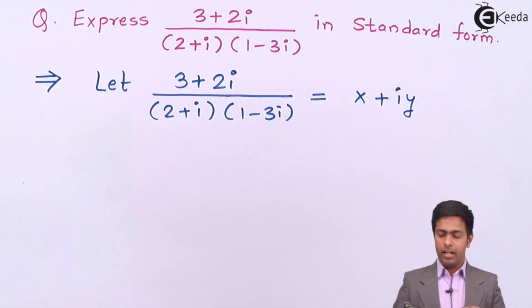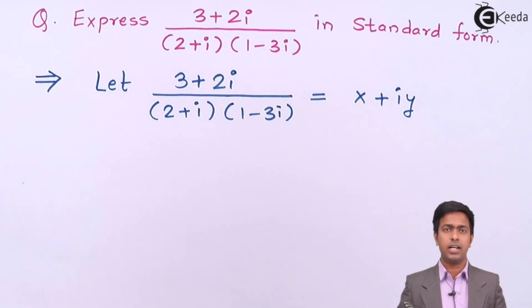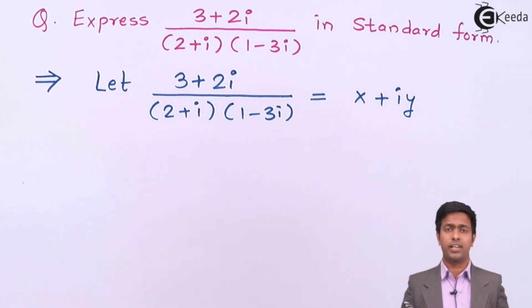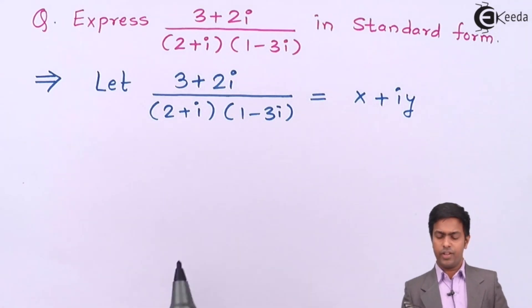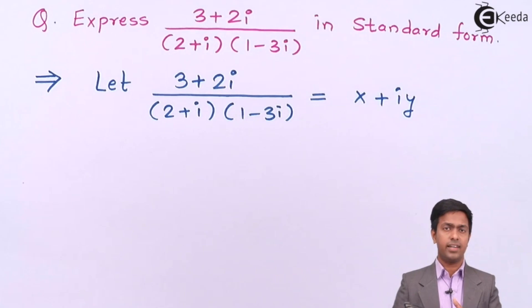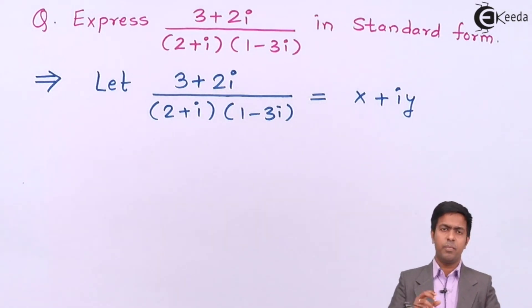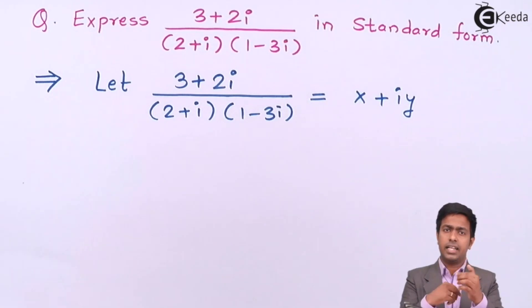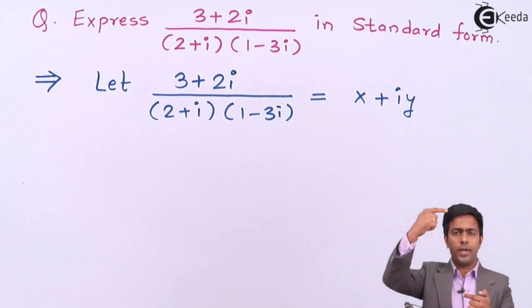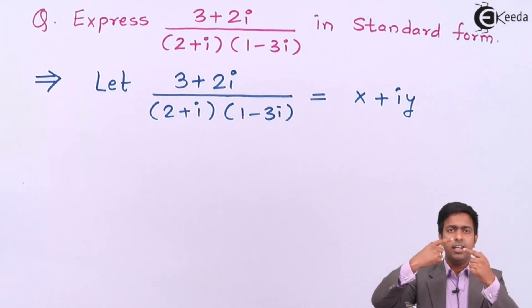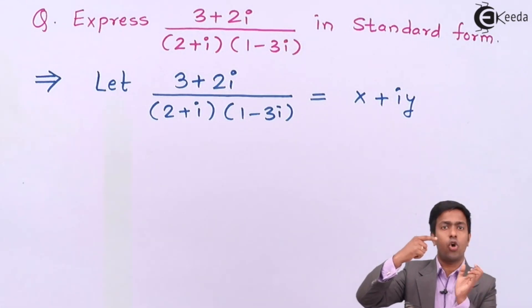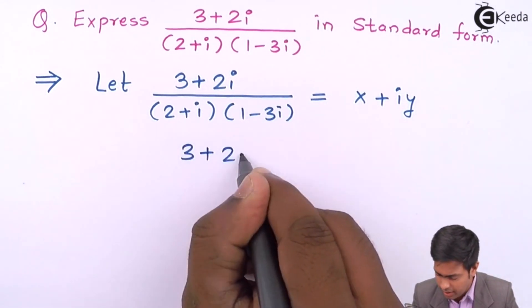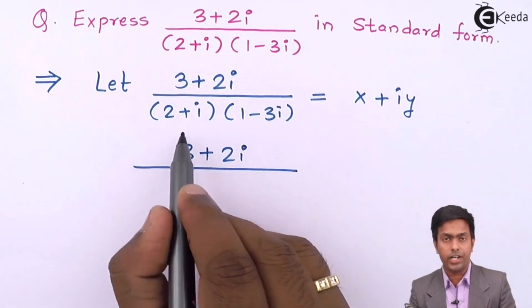To convert this into a single real part and single imaginary part, we need to remove the complex number from the denominator. Here we have two brackets in the denominator — 2 plus i and 1 minus 3i. First, I will multiply these two brackets to get a single complex number in the denominator, and then multiply by the conjugate, as we did in the previous example.